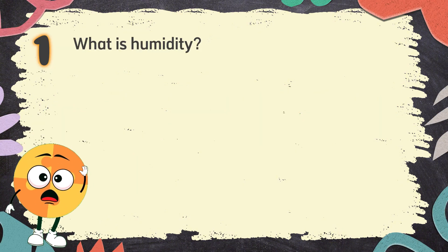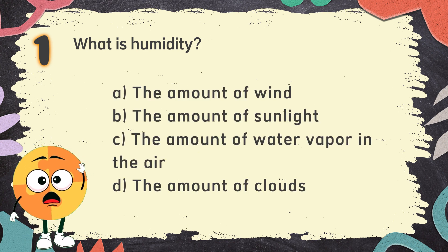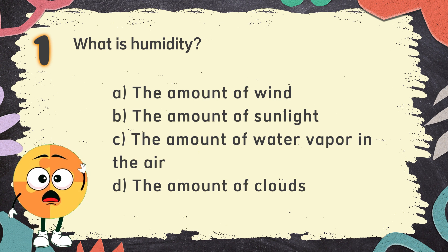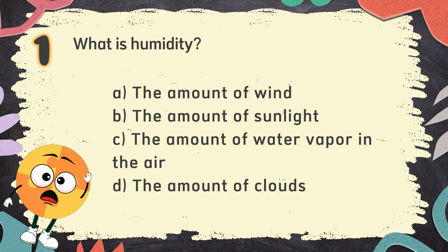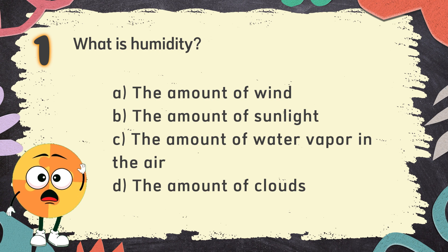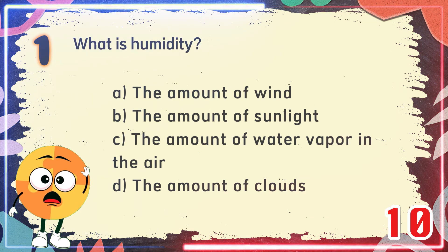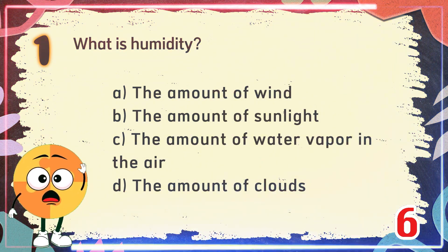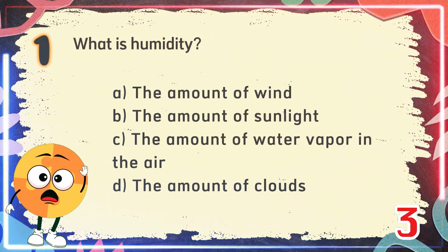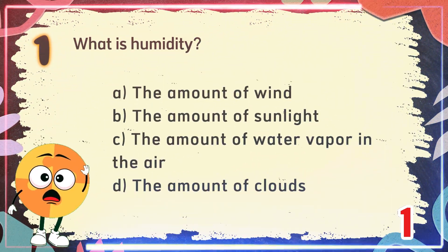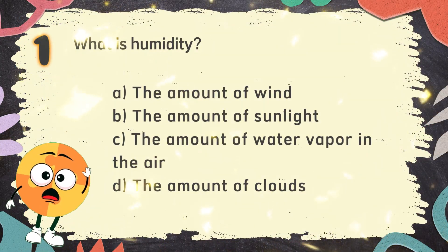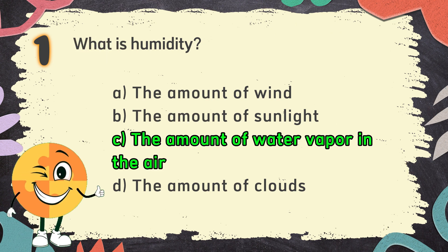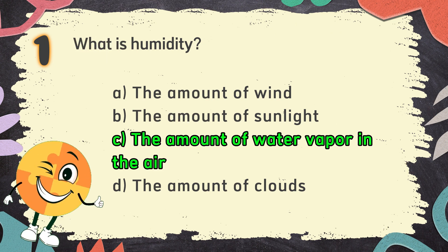Number 1. What is humidity? The choices are: A. The amount of wind. B. The amount of sunlight. C. The amount of water vapor in the air. D. The amount of clouds. The correct answer is C: the amount of water vapor in the air.